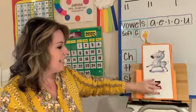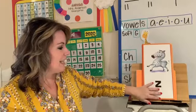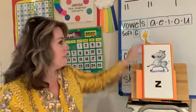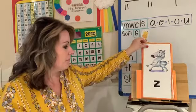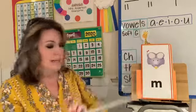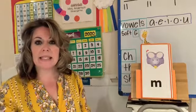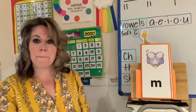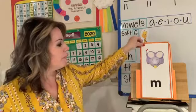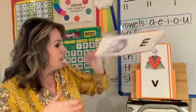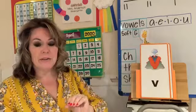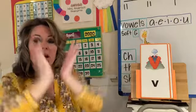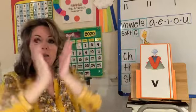The letter is Z and the sound is z, z, z. The letter is M and the sound is m, m, m. The letter is V and the sound is v, v, v.